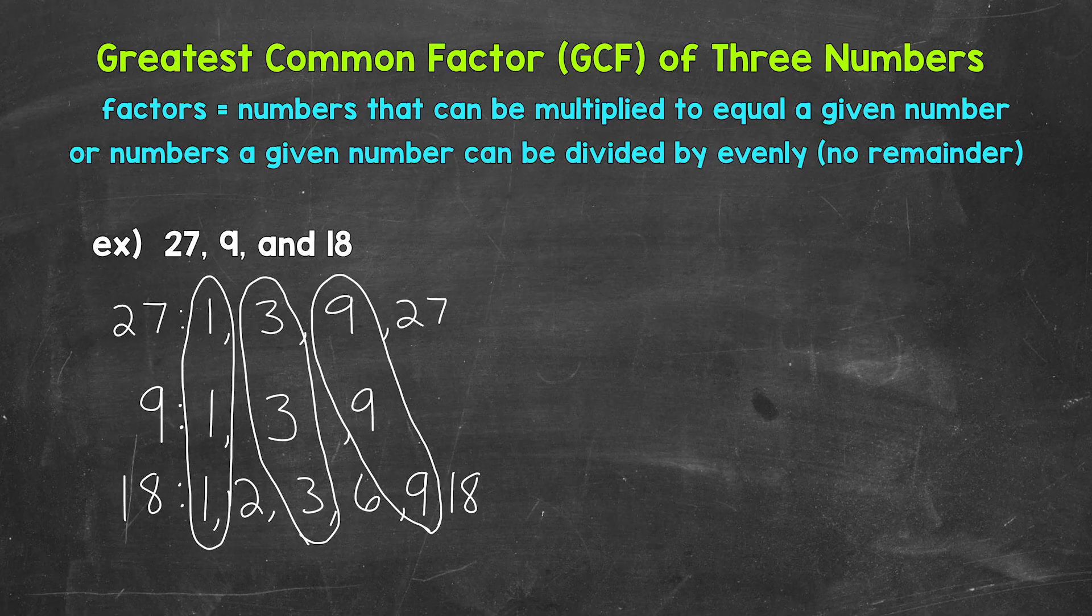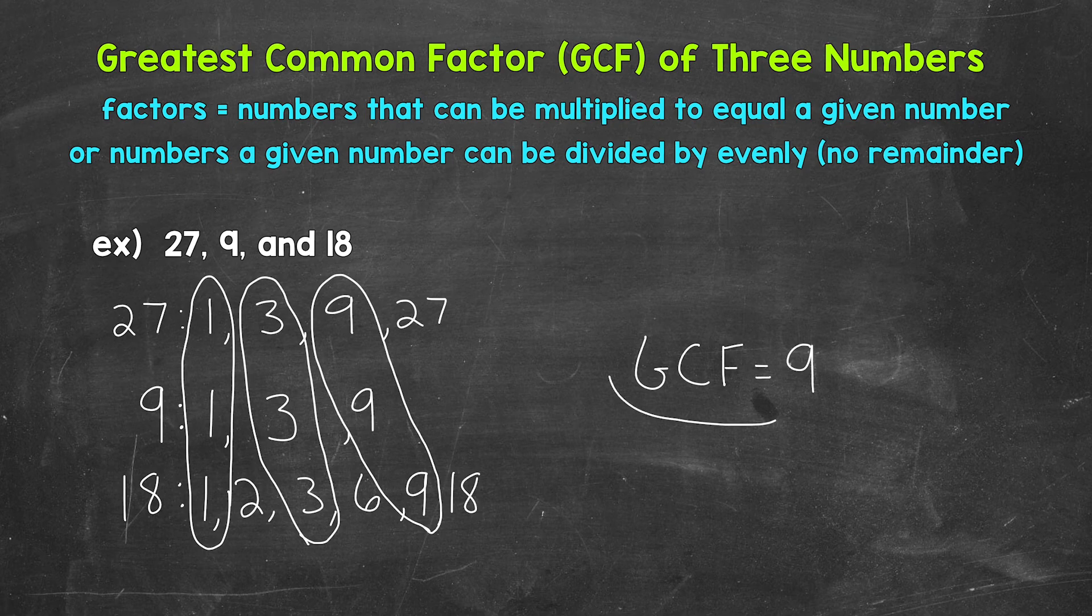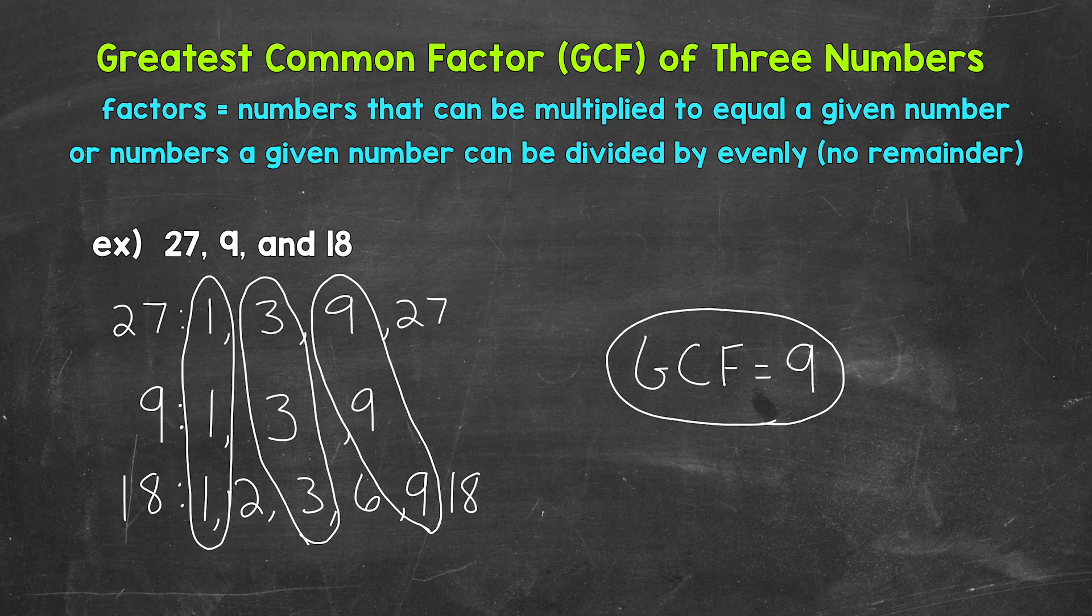Now the greatest common factor is going to be 9. So over to the right, I'll write the GCF, which stands for the greatest common factor equals 9. So the greatest common factor of these three numbers, 27, 9, and 18, is 9.